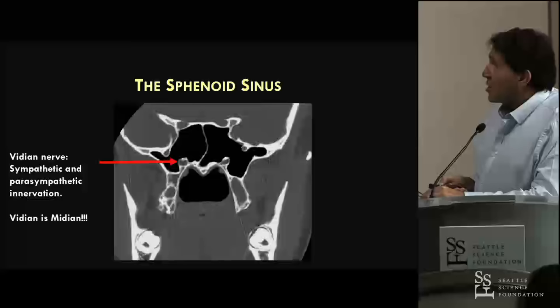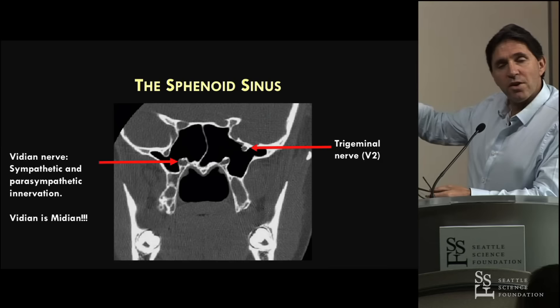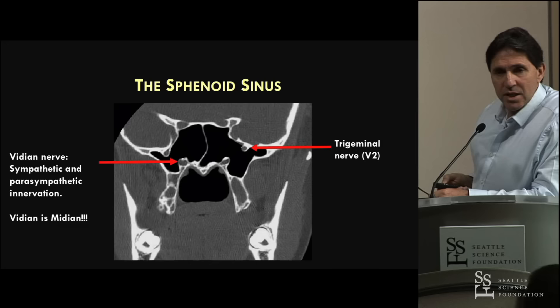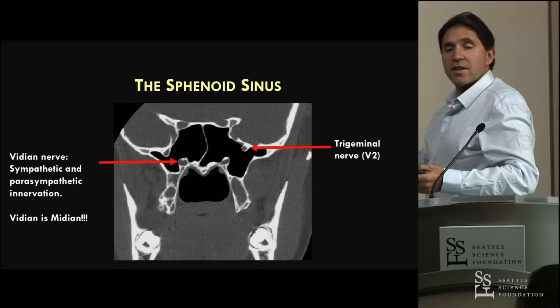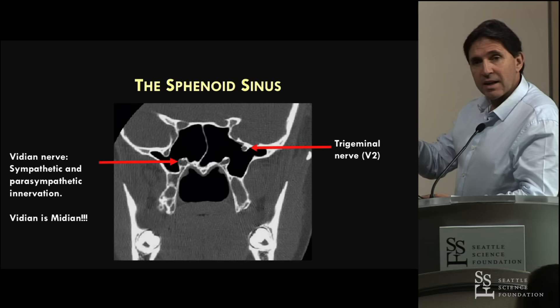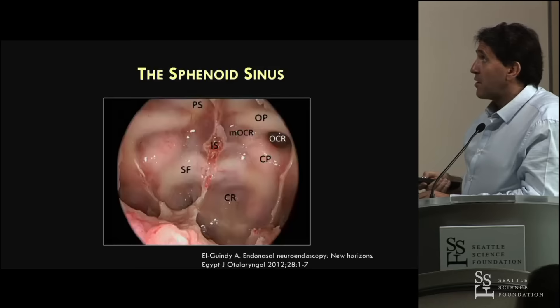Just lateral and superior to that is V2, a nerve we really want to avoid. We see V2 when we're doing pterygopalatine surgery. Sometimes you don't get pneumatization of the pterygoid root and it's well encased in bone. The other important things are obviously the cavernous sinus with the carotid artery and the optic nerve. When the anterior clinoid process is pneumatized, we have a very deep primary optico-carotid recess, which can lead to problems in the sphenoid if you don't identify it.